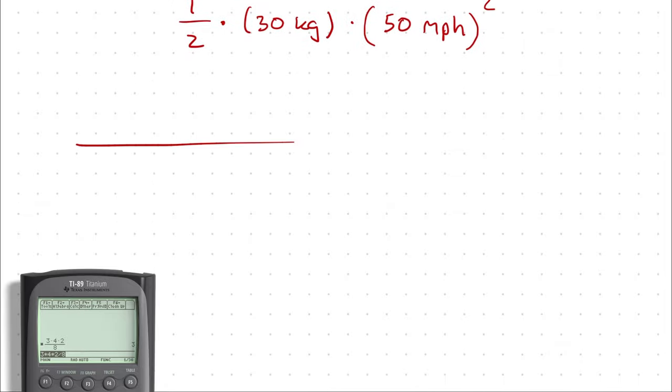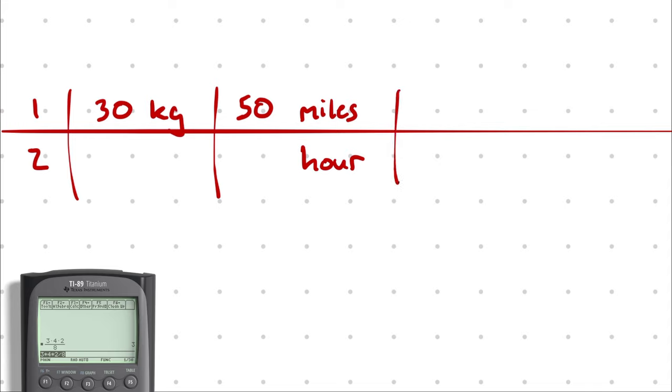So I would write that by taking one half which I could write as 0.5 or 1 divided by 2. Then I'm multiplying by 30 kilograms. Then I'm multiplying again by 50 miles per hour. At this point I could write another vertical line and then another 50 and another miles and another hour and that would be completely fine. Or because each of these is appearing twice I could just square all of my terms in the first quantity. 50 squared miles squared per hour squared.